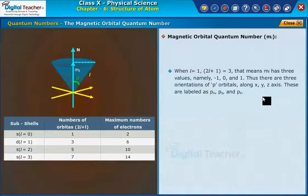When l is equal to 1, 2l plus 1 is equal to 3. That means m_l has three values, namely minus 1, 0 and 1. Thus, there are three orientations of p orbitals, along x, y, z-axes. These are labelled as px, py and pz.